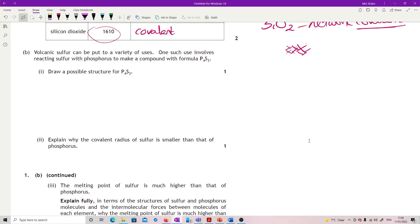Volcanic sulfur can be put to a variety of uses. One such use involves reacting sulfur with phosphorus to make a compound with the formula P4S3. Draw a possible structure for P4S3. Where you have to start is you have phosphorus and sulfur. Sulfur has a valency of two, that means it needs to be connecting at two points. Phosphorus group five, so its valency is three. It needs to connect at three points.